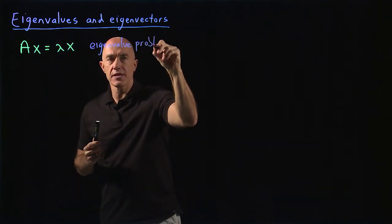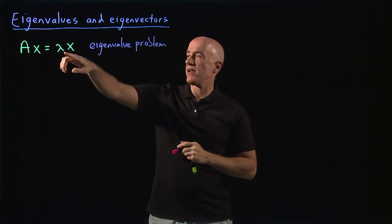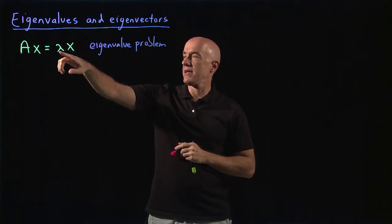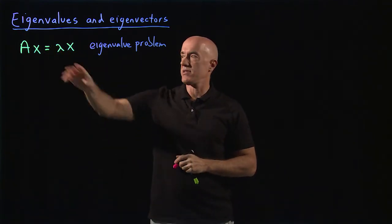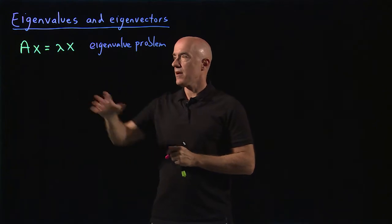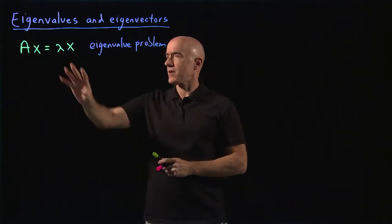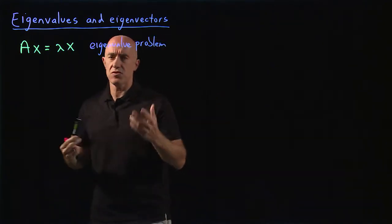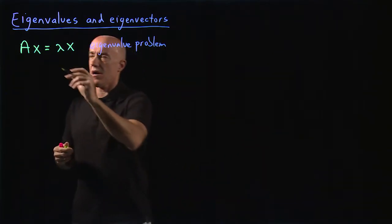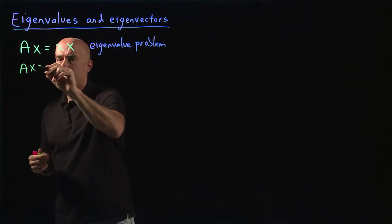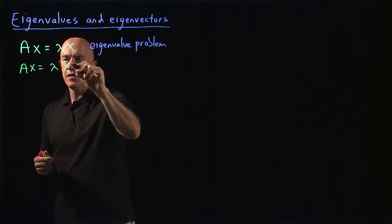The matrix A is given, and the question is: can you find values of lambda and corresponding column vectors x that satisfy this equation given the matrix A? So how do you solve the eigenvalue problem? What you do is slightly tricky but actually straightforward.